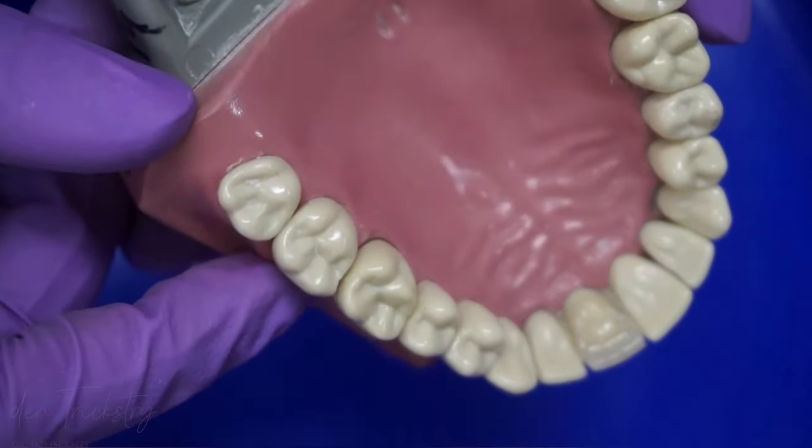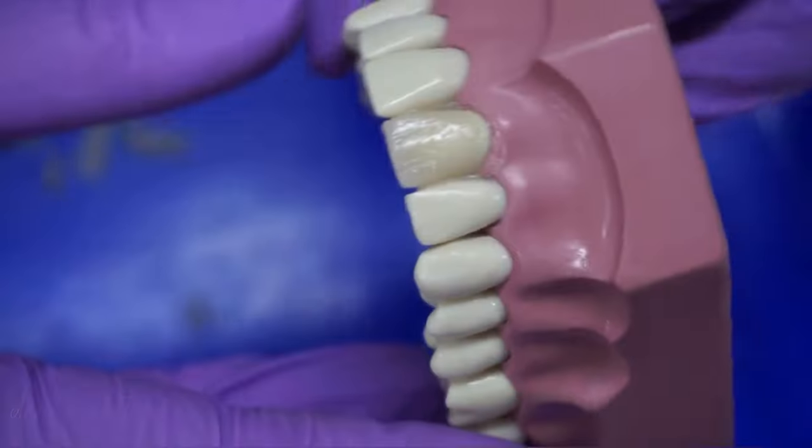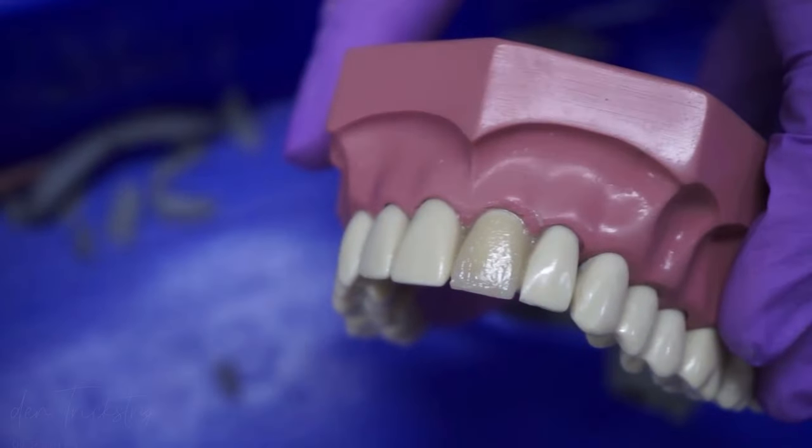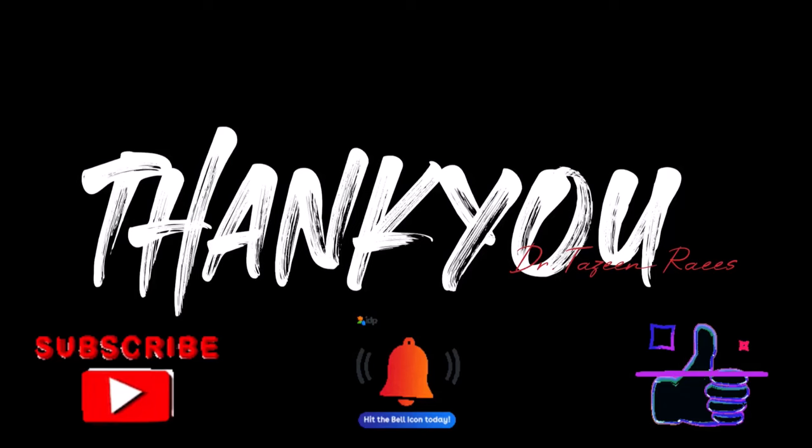Once you remove the index, as you can see, we are done and your immediate temporary crown is ready. Remove any excess material from the gingiva. Since this is a model, it is very difficult for the crown to come out and it gets fixed onto the tooth. One thing I missed in this video is the application of Vaseline on the prepared tooth surface. If you do that, the crown comes out easily as long as there are no undercuts.